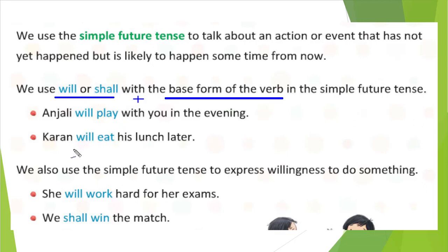See the second example: Karan will eat his lunch later. Currently Karan is not eating lunch; he will eat after a few hours. That is what it is indicating. Here, will plus the base form of the verb eat — that is all we wrote in the place of the verb to show the action. Karan will eat his lunch later.